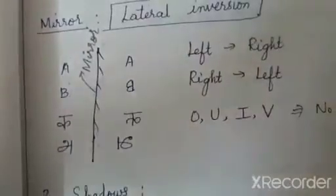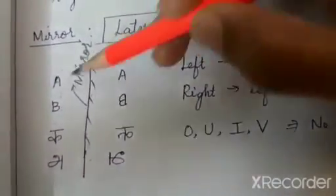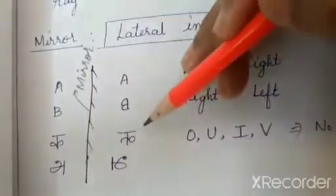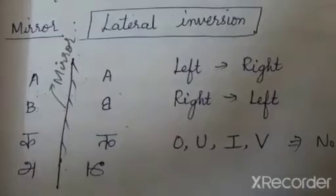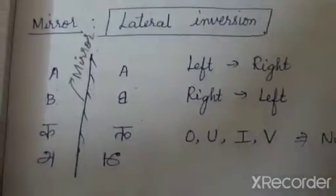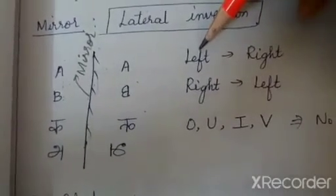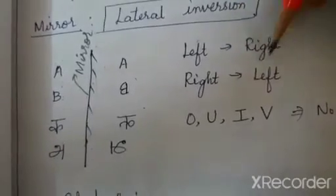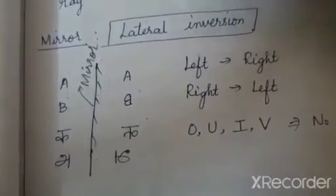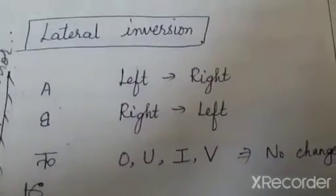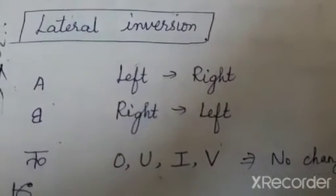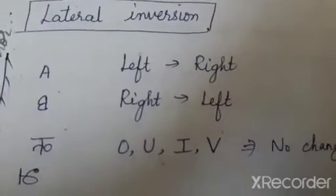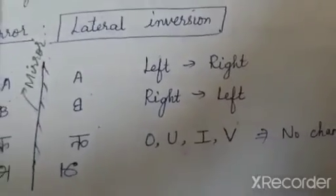These are called mirror images. For example, the letter A is shown inverted, B is inverted, the Hindi letter 'ka' is inverted, and the Tamil letter 'i' appears changed. Whatever you display in front of a mirror is inverted — the left of an object appears as right and the right appears as left. However, not all letters show lateral inversion. Letters like O, U, I, and V will appear the same in the mirror. Try it at home and check!